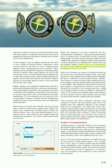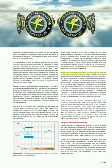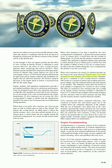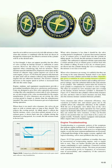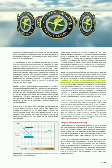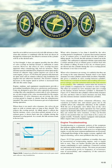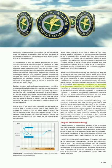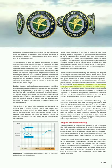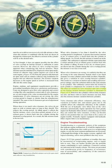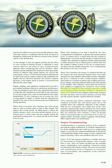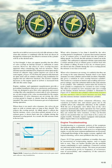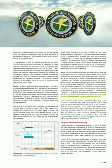When valve clearances are wrong, it is unlikely they are all wrong in the same direction — some cylinders may have too much clearance and others too little. This gives a variation in valve overlap between cylinders, resulting in variation in fuel/air ratio at idling and lower power settings. Since the carburetor delivers the same mixture to all cylinders, it cannot tailor the mixture to each cylinder to compensate for variation in valve overlap.